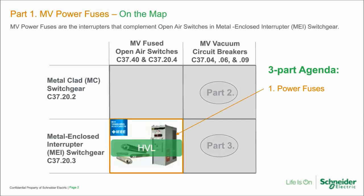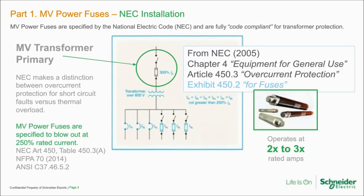Part one: power fuses. MV power fuses are the interrupters that complement open air switches in metal-enclosed interrupter switchgear. We'll be focusing mostly on the application of a transformer primary so that we can compare and contrast the differences. Just realize that the information here is relevant to many other applications as well.